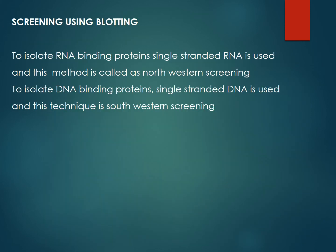Then we use Blotting. We have an RNA binding protein and a DNA binding protein. Blotting types include Southern Blotting, Northern Blotting, South Western Blotting, and North Western Blotting. Southern Blotting is for DNA presence. Northern Blotting is for RNA. Western Blotting is for protein.